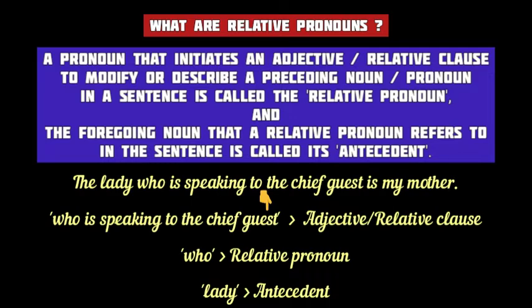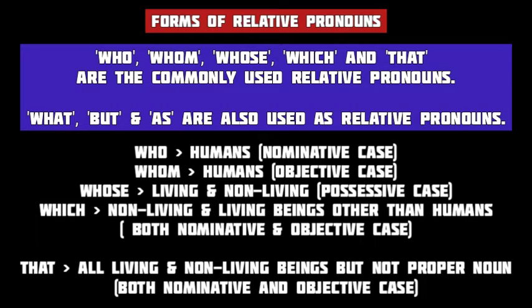There are five commonly used relative pronouns in English grammar: who, whom, whose, which, and that. Three other words — what, but, and as — are also sometimes used as relative pronouns. Of the five common relative pronouns, 'who' is used only for human beings and is always the subject of the relative clause — in the subjective or nominative case. 'Whom' is also used for human beings only, but in the objective case as the object of the relative clause.